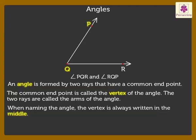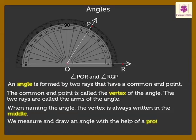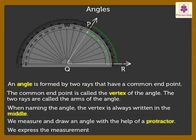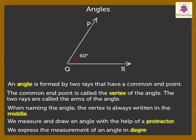angle PQR and angle RQP denote the same angle Q. We measure and draw an angle with the help of a protractor. We express the measurement of an angle in degrees.